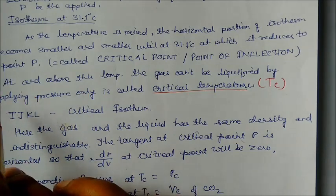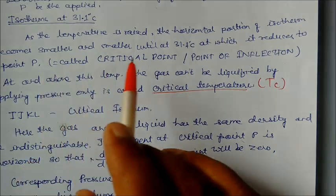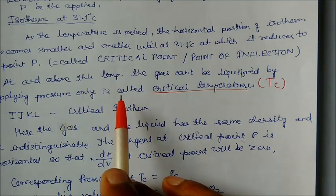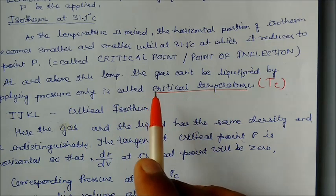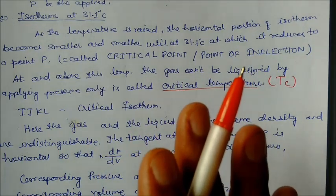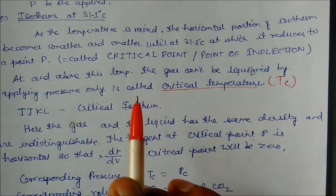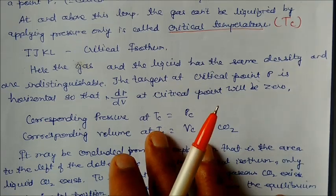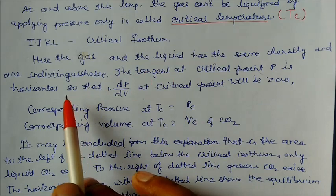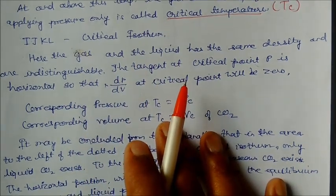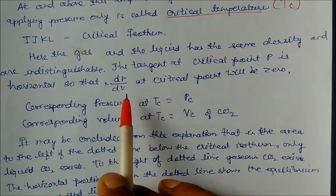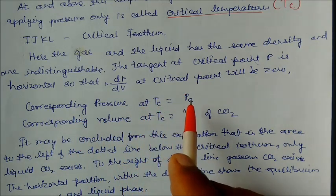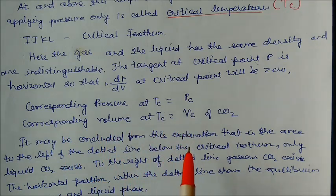At or above 31.1°C, the gas cannot be liquefied by applying pressure alone. This maximum temperature is called the critical temperature. The isotherm IGKL is called the critical isotherm. At the critical point, the gas and liquid have the same density and the phases become indistinguishable. The tangent at critical point P is horizontal, meaning dP/dV = 0 at the critical point. The corresponding pressure is the critical pressure Pc and corresponding volume is the critical volume.